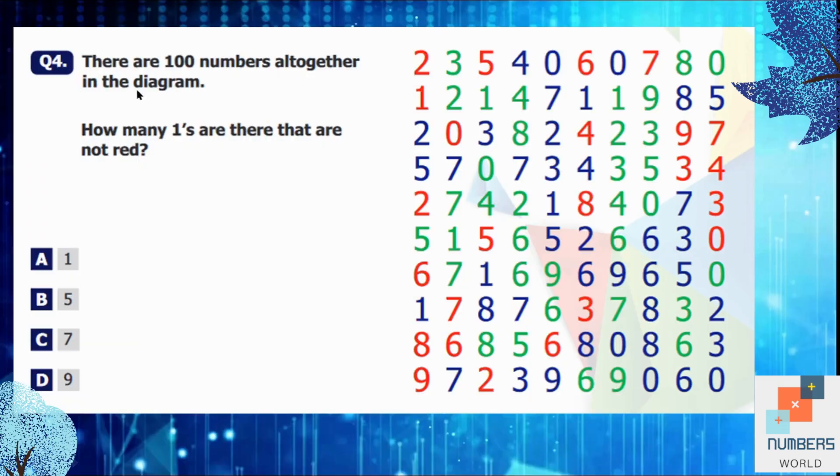Question number 4: There are 100 numbers altogether in a diagram. How many 1's are there that are not in red? So be careful about it. They didn't ask you to count the number of 1, instead it's 1's which are not red. So we will move in the sequence. We will see the first column. There is a 1 in red color. So we will not count it. But we can see a 1 in blue color. So this is our first one.